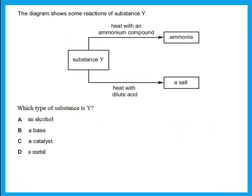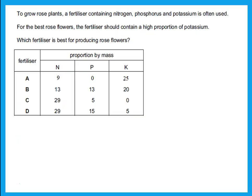The diagram shows some reactions of substance Y. When it is heated with ammonium compound, it gives ammonia. And when it is heated with acid, it gives a salt. To react with acid to give a salt, it has to be a base.